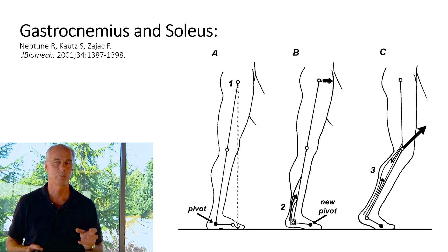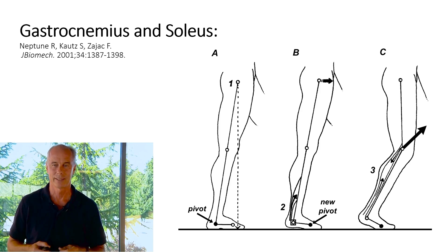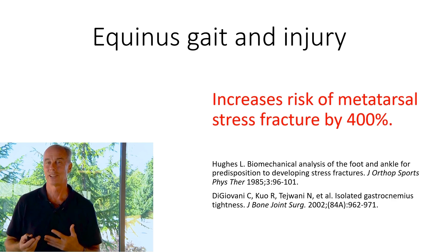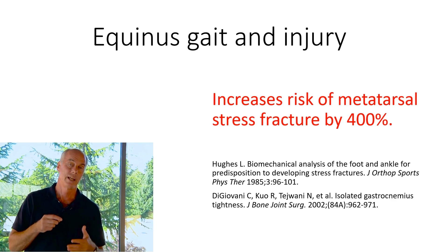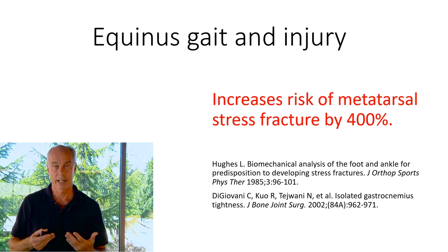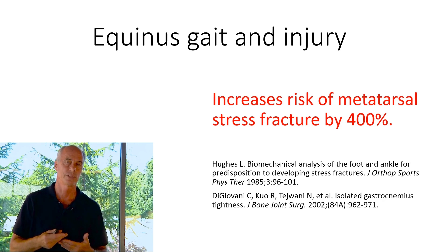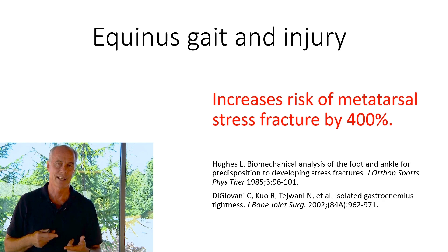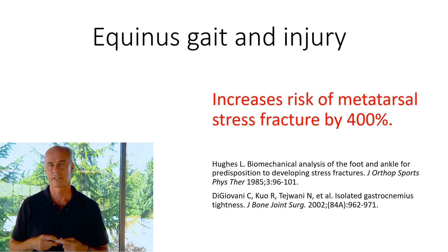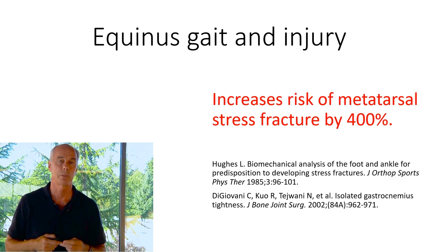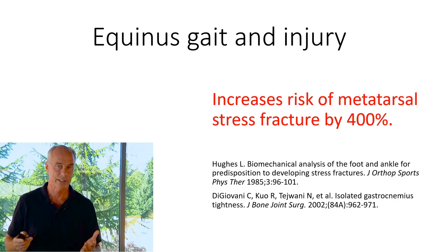Hughes showed that tightness in the gastrocnemius causes the heel to leave the ground prematurely, transferring force into the forefoot. There's more stress on the forefoot during the propulsive period than on the heel during contact because of accelerational forces. If you have less than 5 degrees of upward ankle motion, you have a 400% increased risk of metatarsal stress fractures because that early heel lift creates a prolonged propulsive period. When treating runners with metatarsal stress fractures, most doctors don't even think to look for isolated gastrocnemius contracture.